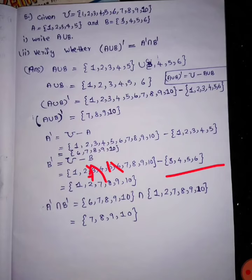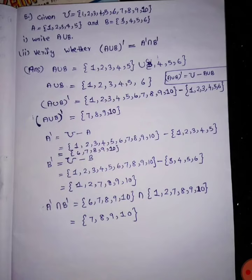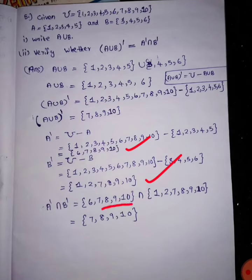Because that is this value. The other elements are 1, 2, 7, 8, 9, 10. This is a great question. Let's talk about intersection. Good — A dash intersection B dash. The common terms: again 7 and 8, 9 and 10 are common terms.